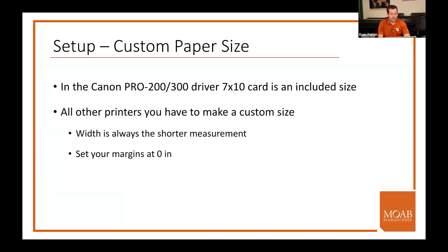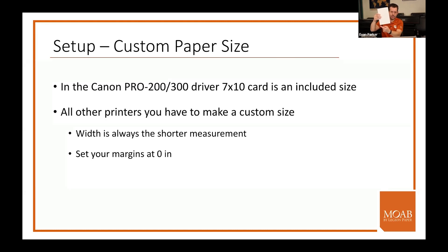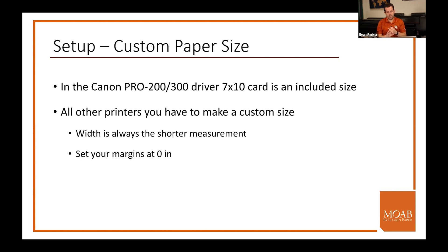The first part of printing cards is making a custom paper size, since your printer won't ship with sizes like 9 by 5-and-13/16. Two key things: first, the width in the custom paper size is always the shorter measurement, because you always load cards short edge first. Second, set your margins to zero, because Photoshop and Lightroom measure image centering from inside the margins. Many printers have a slightly larger leading-edge margin, which will throw off centering if margins aren't zeroed out.